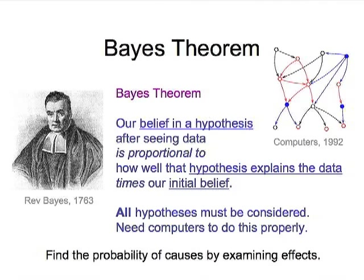Bayes' theorem puts this all together for us. The Reverend Bayes published a major paper posthumously in 1763 that tells us how we can find the probability of causes by examining effects. What Bayes' theorem says is that our belief in a hypothesis, after having seen data from an experiment, is proportional to how well that hypothesis explains the data — the likelihood — times our initial belief, the prior.